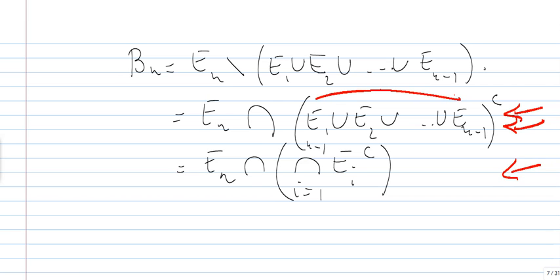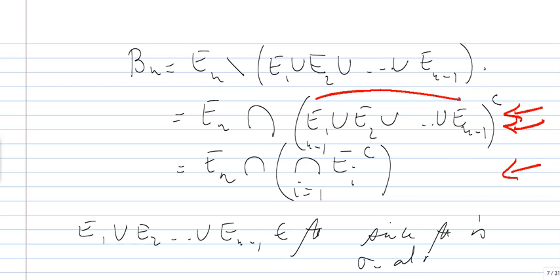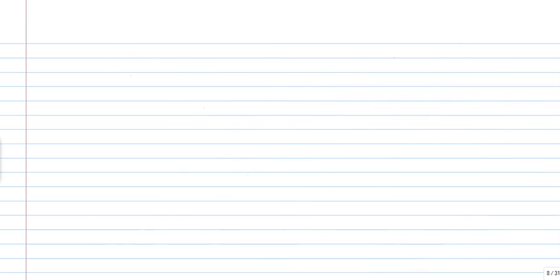So either we stop at here, or we can push it to here. So, even in the first case, we can just say that E1 union E2 union E_{n-1} belongs to A, by the fact that A is a sigma algebra. Then the complement will belong to A, and the intersection with E_n belongs to A, so the B_n's belong to A.